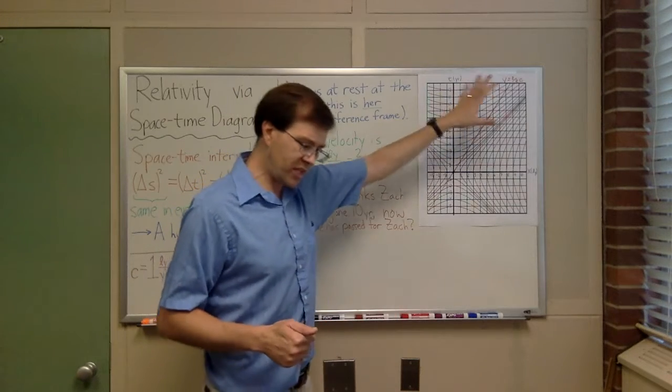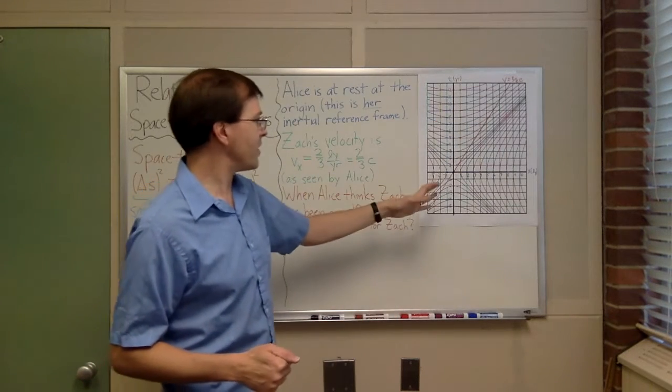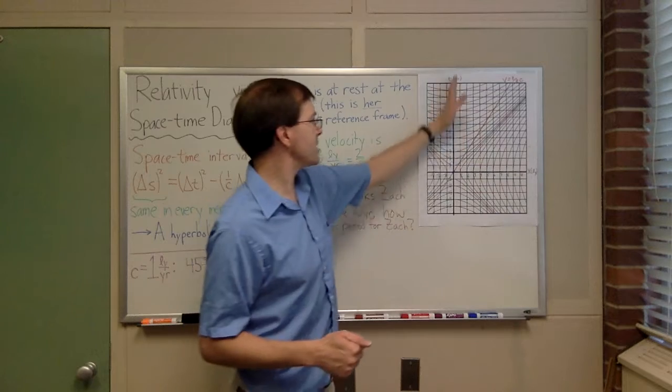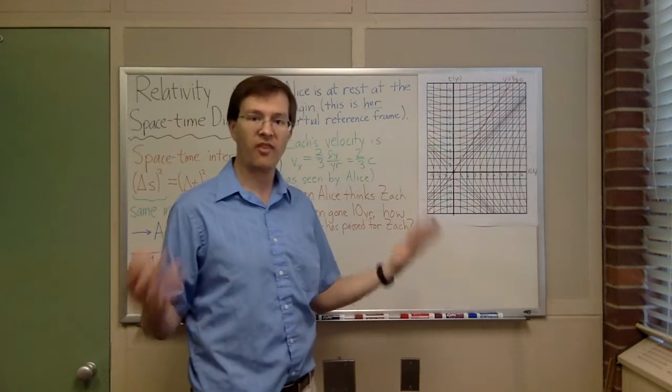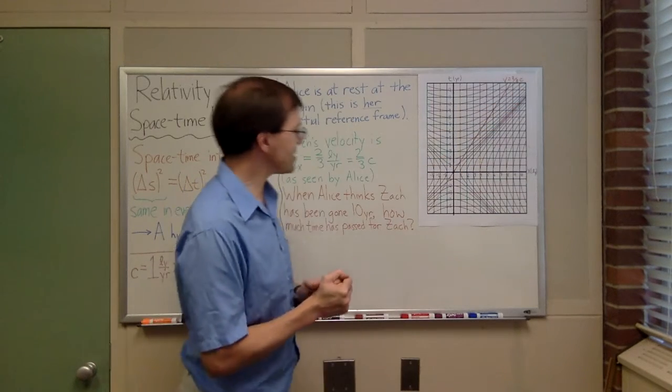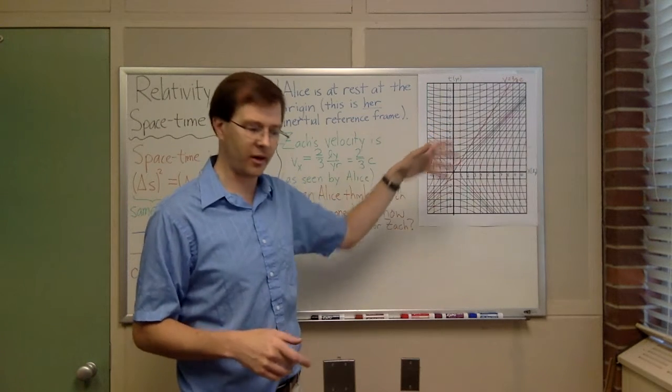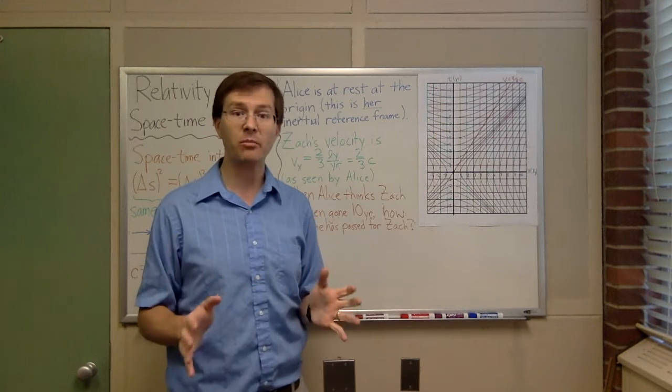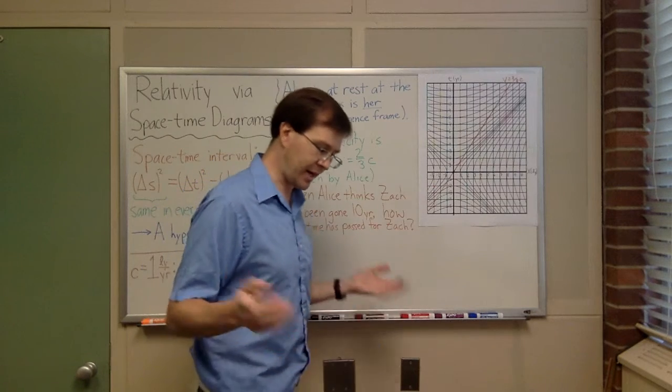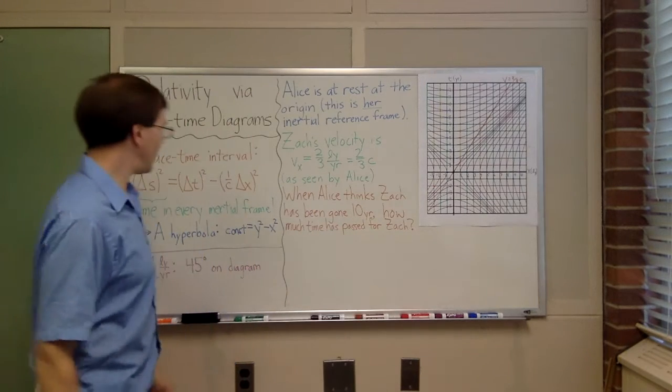So thus far we've talked about the way we draw this, and we can compare Alice's path to Zach's path. But I haven't said anything about why this is complicated graph paper, why I have all these curving lines on there. And for that, I have to tell you a little bit about the structure of relativity.